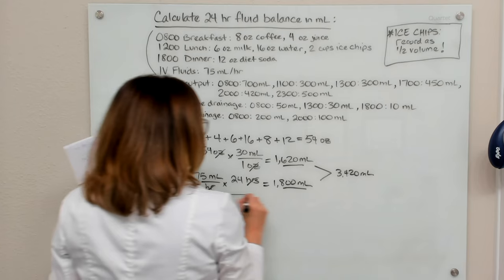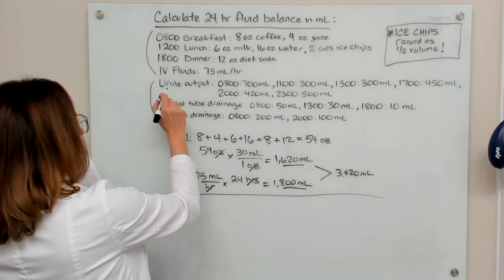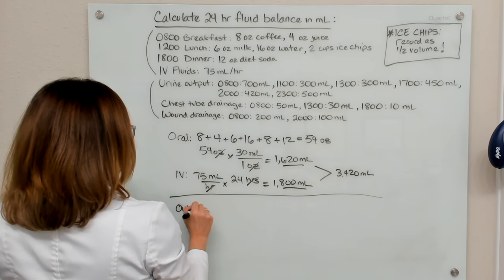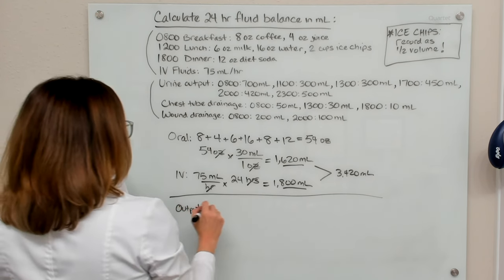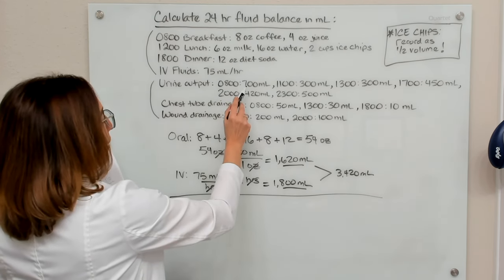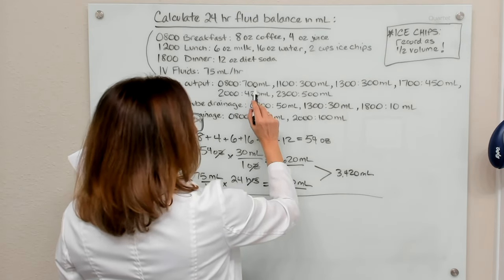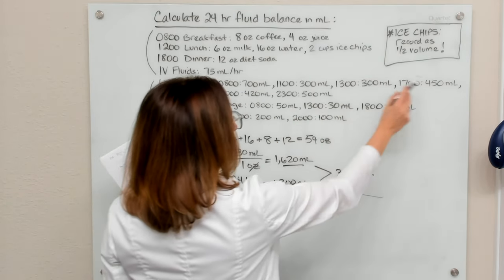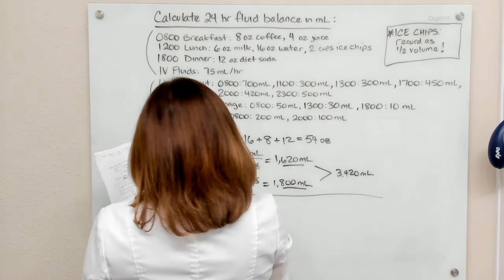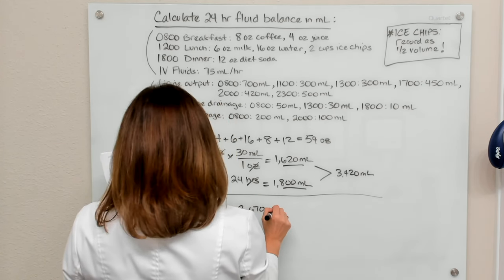Okay, so that's the intake part of the problem. Now we're going to work on the output. So for output, we're going to add up the urine output here. So this is how much urine was tracked throughout the day. So if we add up 700 plus 300 plus 300 plus 450 plus 420 plus 500, we end up with 2,670 mLs.